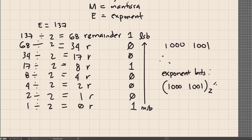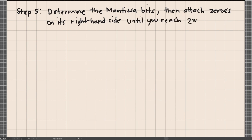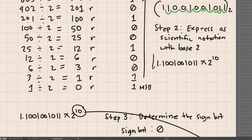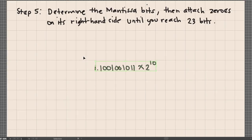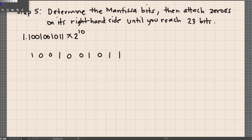For the last step, determine the mantissa bits, then attach zeros on the right-hand side until you fill up all 23 bits. The fractional part from our scientific notation — 1001010011 — gives us 10 bits. We need to add 13 more zeros to complete the 23-bit mantissa.